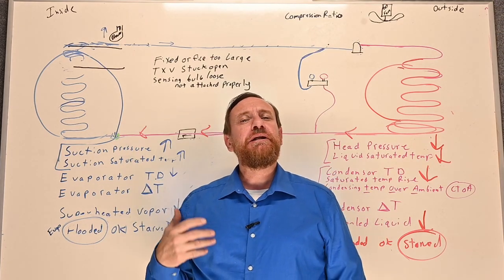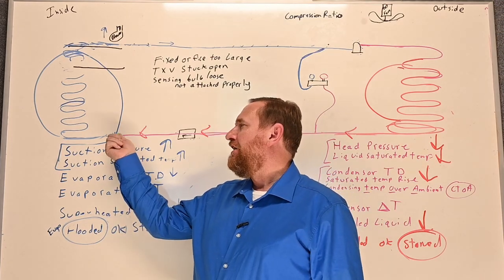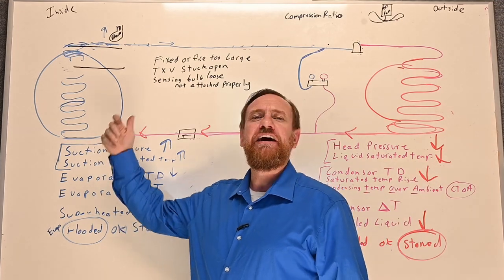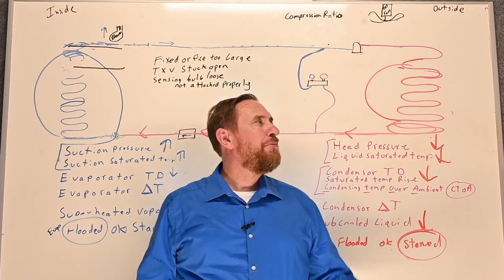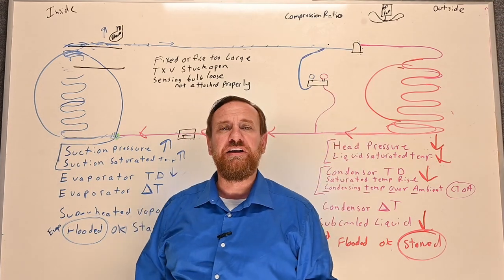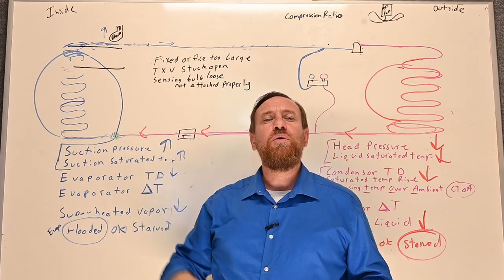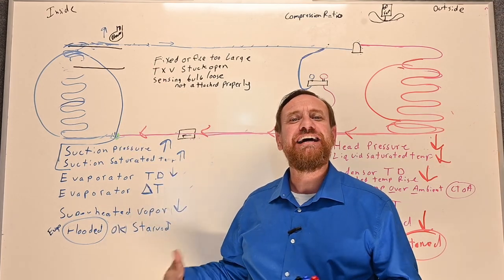And I've seen this done by accident. Somebody simply changed the evaporator coil or they changed the condensing unit and they left whatever metering device was with the evaporator coil instead of putting the metering device that matched the compressor. And because it made noise and blew cold air, they thought, well, it works. Well, it wasn't working because I had to go out and fix it.